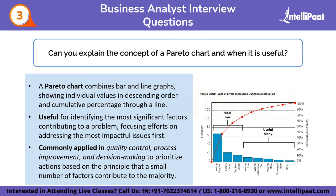The third question is: can you explain the concept of a Pareto chart and when it is useful? A Pareto chart combines bar and line graphs, showing individual values in decreasing order and a cumulative percentage through a line. It is useful for identifying the most significant factors contributing to a problem, focusing efforts on addressing the most impactful issues first. It is commonly applied in quality control, process improvement, and decision-making, based on the principle that a small number of factors contribute to the majority of the impact.